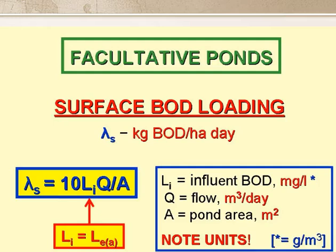If Li is in milligrams per litre, that is, grams per cubic metre, q is in cubic metres per day, and A, the area, is in square metres, then lambda s equals 10 Li·q over A. We end up with a 10 in this equation, as there are 10 to the 3 grams in a kilogram, and 10 to the 4 square metres in a hectare.